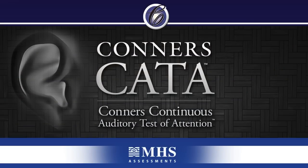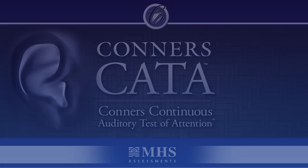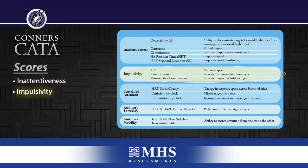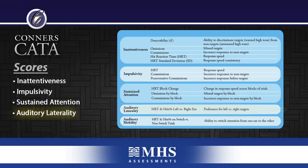Now let's focus on the Connors CATA. The scores and scoring algorithms help assessors pinpoint the exact nature of the respondent's attention problems. The Connors CATA uses both standardized and raw scores to determine the respondent's performance overall, and in five different aspects of attention: inattentiveness, impulsivity, sustained attention, auditory laterality, and auditory mobility.